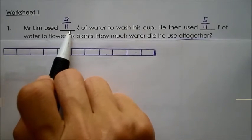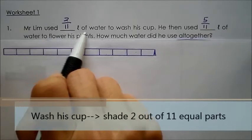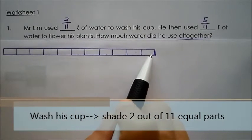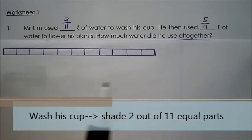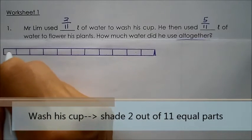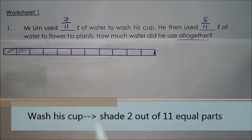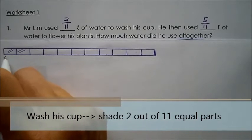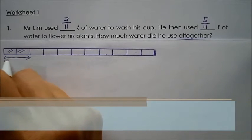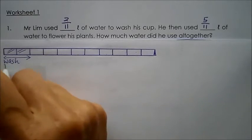Now Mr. Lim used 2 elevenths liter of water to wash his cup. That means to say, out of the 11 equal parts, he used 2 parts to wash his cup. So therefore I shall shade 2 out of the 11 equal parts to show that this is to wash his cup.